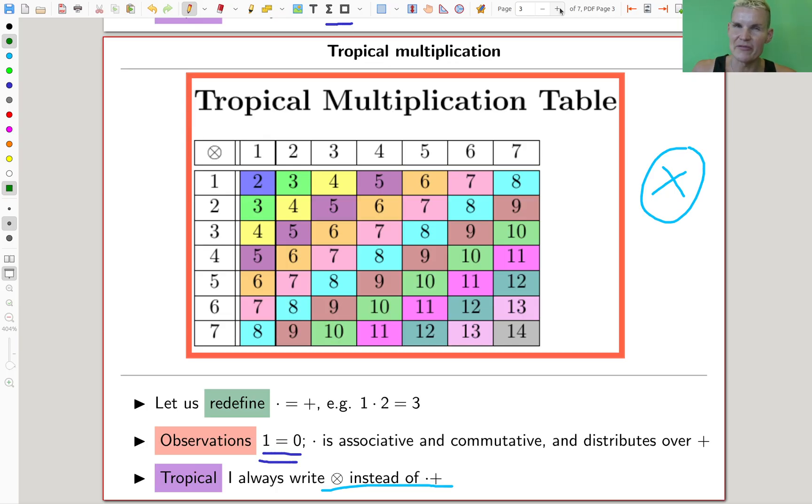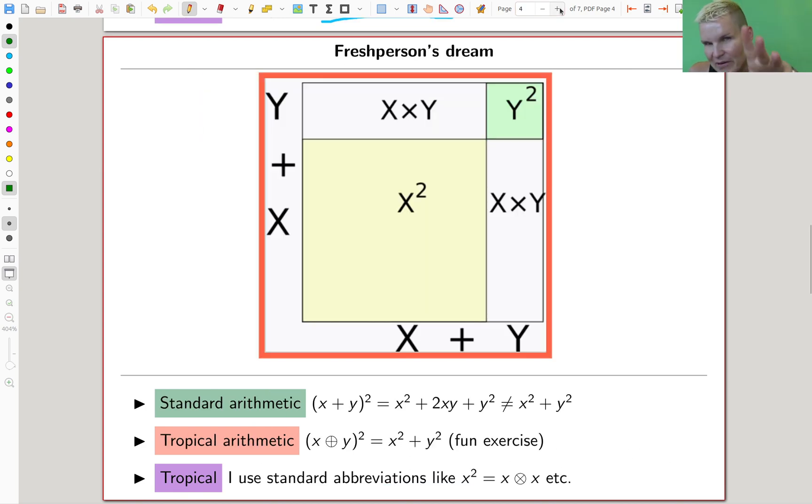And yeah, I would really like those multiplication and addition tables - they are so much easier. So somehow tropical arithmetic is so much easier than standard arithmetic. Why don't we learn that in school? Turns out it's not really much easier, but we'll get there. Here's an example. There's this famous freshman's dream. So a freshman would really like to write something like (x + y)² is x² + y².